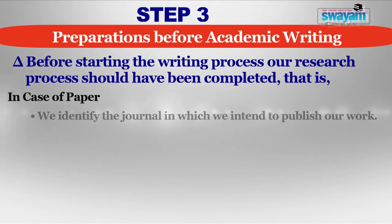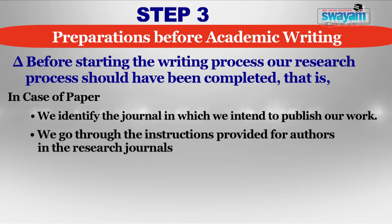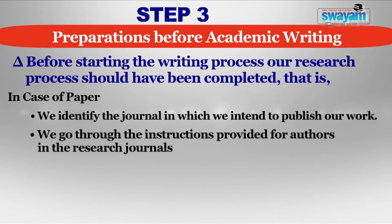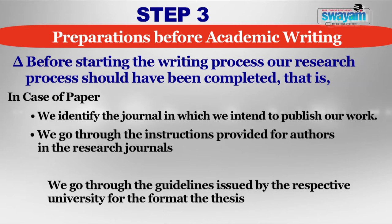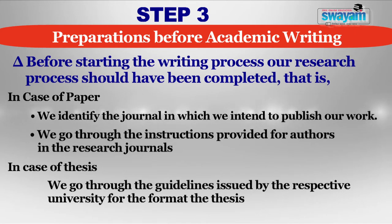Before writing a research paper, we should have identified the journal in which we intend to publish our work. By going through the back issues of the journal, we would be able to understand if our paper matches with the domain of the journal so that it has more chances of getting published and also getting noticed by the peers working in the field. Instructions for contributors or guidelines for authors are provided in all the research journals. We need to attentively go through these instructions in order to design our paper in the correct format. Length, font, font size, style, formatting, referencing style — all has to be done according to the specific instructions, otherwise the paper will not be accepted for consideration. For the format of dissertation or thesis, we must be familiar with the guidelines issued by respective universities which are to be followed strictly.